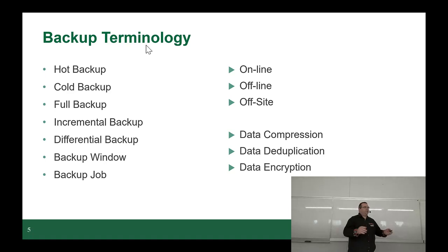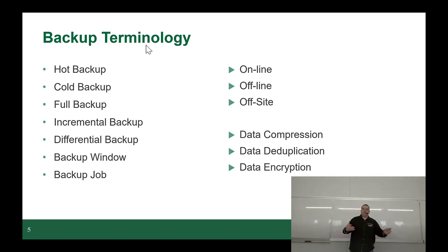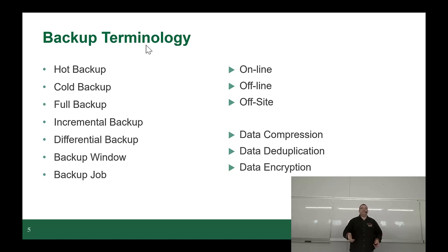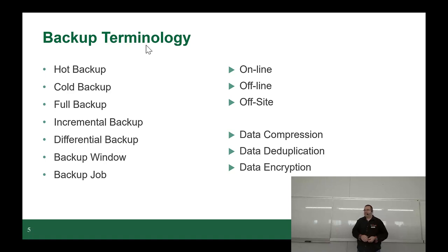Most enterprises will do their backup window sometime between midnight and 4 AM. That's a good period of time because for most enterprises, midnight to 4 AM is when their traffic is the lowest. Smaller companies might go from 8 PM to 6 AM. Big corporations that run 24 hours a day have special procedures for that. A backup job is literally the job that's scheduled to happen during that backup window. Different systems do it differently.